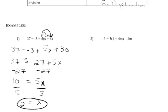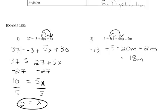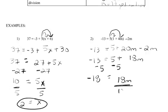Let's try it again. We have to distribute, giving us five plus twenty m minus two m equals negative thirteen. Now combining like terms: eighteen m plus five equals negative thirteen. Now we want to undo addition and subtraction, so we undo this positive five, leaving eighteen m equals negative eighteen. Now we undo the multiplication — divide by eighteen — and m is equal to negative one.